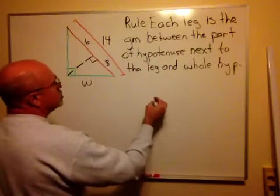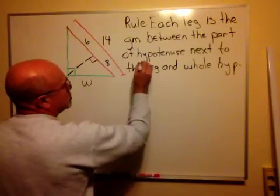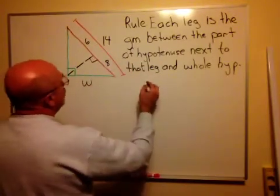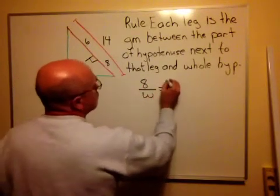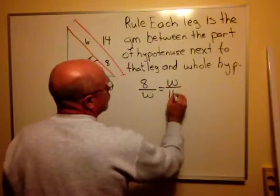That gives us, by definition of geometric mean, there's that T that I missed earlier, that will be 8 over W equals W over 14.